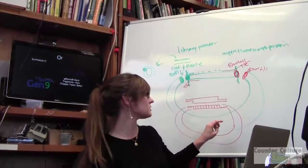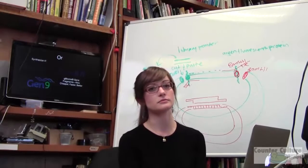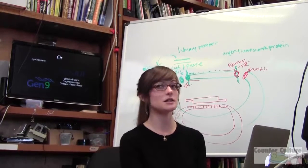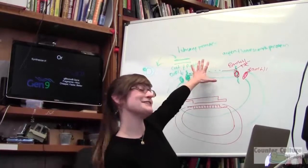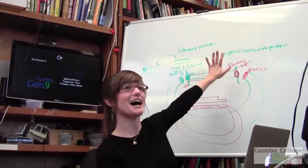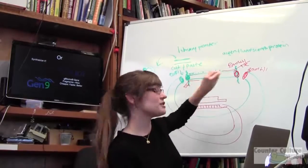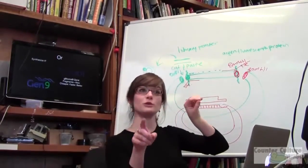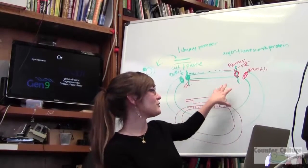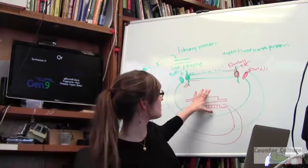There are restriction enzymes that recognize the sequence and then cut next to it. That's golden gate cloning, which is advanced cloning. Golden gate cloning uses type 2 restriction enzymes where they sit on the site but cut X number of nucleotides away, which is beneficial for many reasons that you'll understand better once you go through some molecular biology.